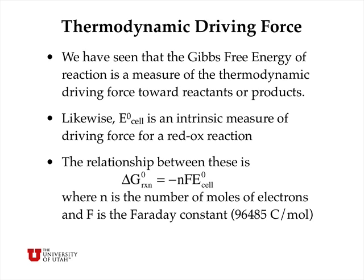You can see that if I simply multiply all the stoichiometric coefficients by 2, then N, the number of moles of electrons transferred, is going to double, and that will cause delta G to double, but E0 cell is an intrinsic measure, and so it just remains the same.